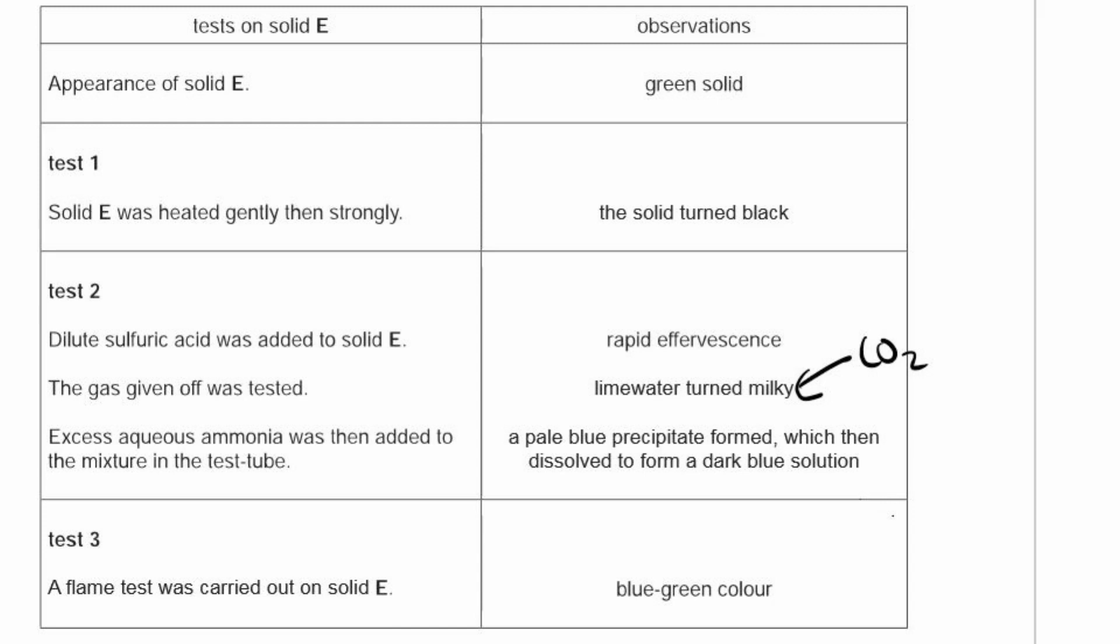Lime water turned milky is a classic test for carbon dioxide. Then excess aqueous ammonia was added to the mixture in the test tube, and that produced a pale blue precipitate, which dissolved as they added more ammonia to form a dark blue solution. That is the result for copper two plus. It starts as a light blue precipitate, which is soluble in excess ammonia, forming a dark blue solution. Test 3: a flame test was carried out on solid E, producing a blue-green color, which is copper.